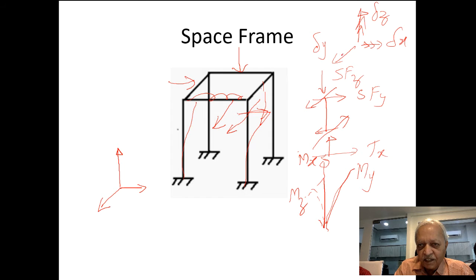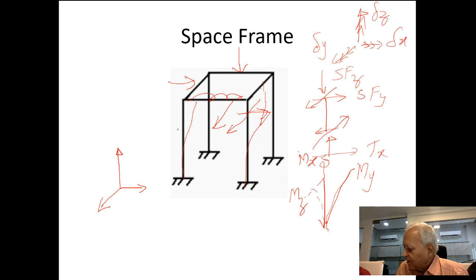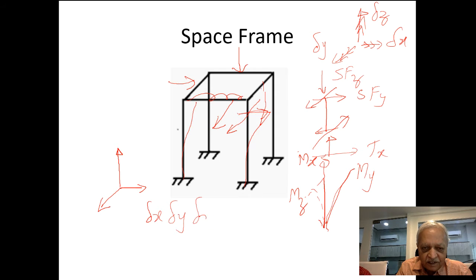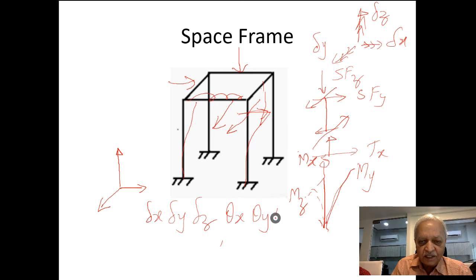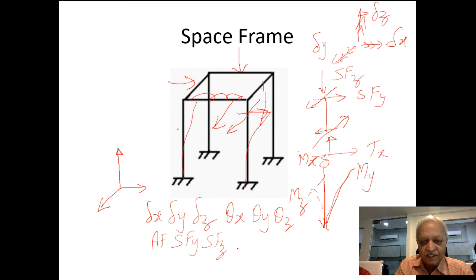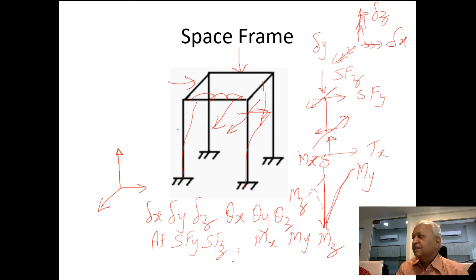As soon as you classify a structure as a space frame under general loading, you conclude that at each joint there are six displacements: three linear (delta x, delta y, delta z) and three rotational (theta x, theta y, theta z), plus six internal forces: axial force, shear in y, shear in z, and moments mx (torsional), my, and mz.